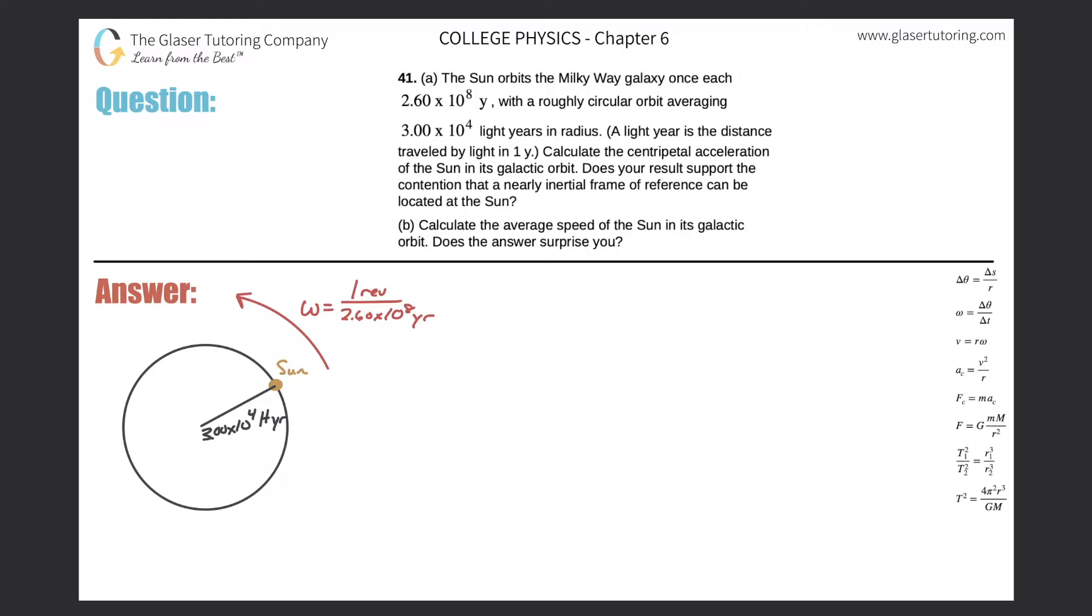Number 41, letter A. The Sun orbits the Milky Way galaxy once each 2.6 times 10 to the 8 years with a roughly circular orbit averaging 3 times 10 to the 4 light years in radius. A light year is the distance traveled by light in one year. Calculate the centripetal acceleration of the Sun in its galactic orbit.